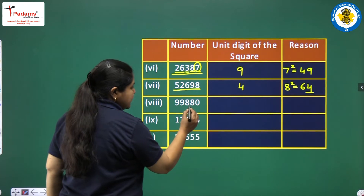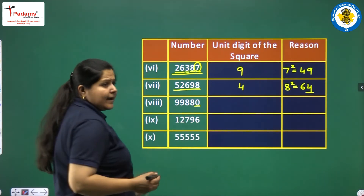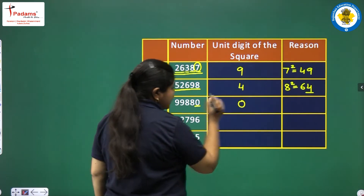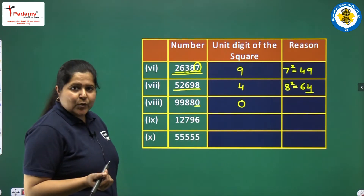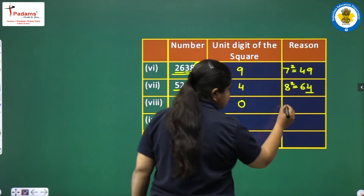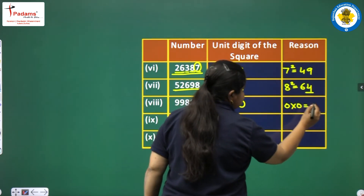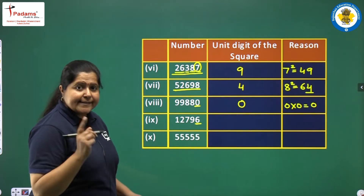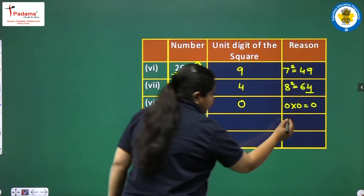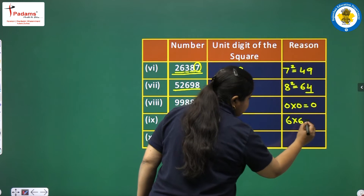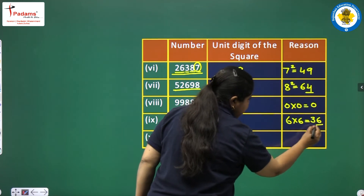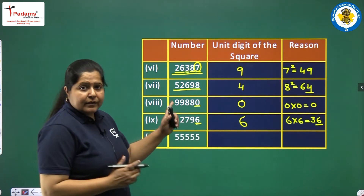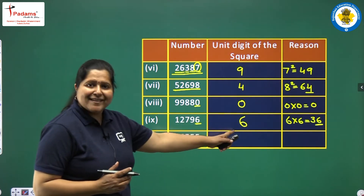For 99,880, the last digit is 0. Naturally, when we square this number, the ones place digit will also be 0, because 0 into 0 is 0. For a number ending in 6, multiplying 6 by 6 gives 36, so the square of that complete number will end at digit 6.